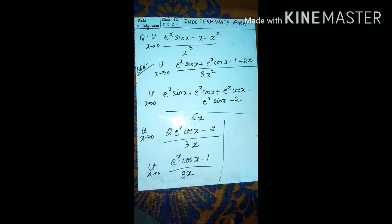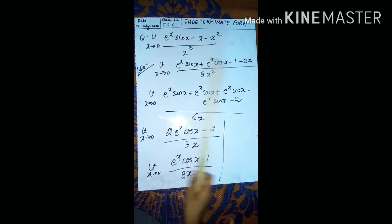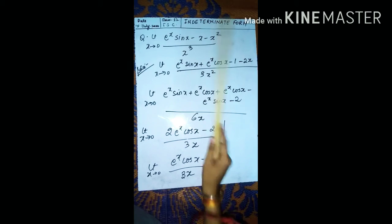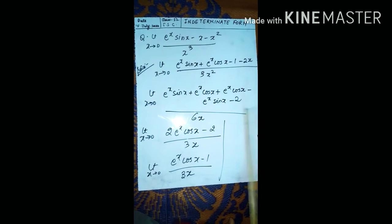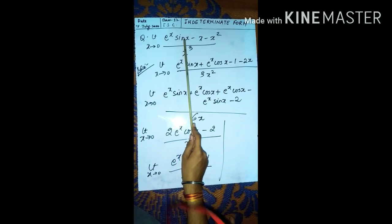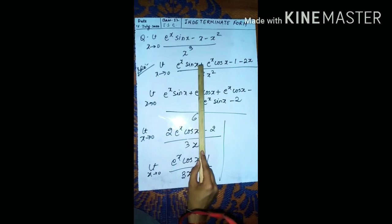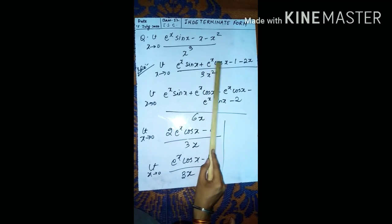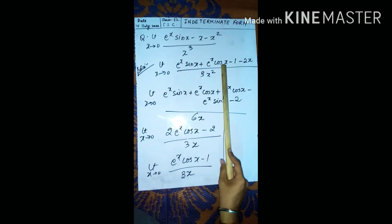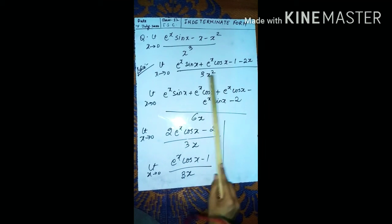Now a somewhat complex question: limit x tends to 0 of (e to the power x times sin x minus x minus x squared) upon x cubed. Putting x tends to 0 gives 0 by 0 form, so we need to use L'Hôpital's rule. For the numerator, e to the power x times sin x requires the product rule: sin x times e to the power x plus e to the power x times cos x, minus 1 minus 2x, over 3x squared. Putting x tends to 0 still gives an indeterminate form.